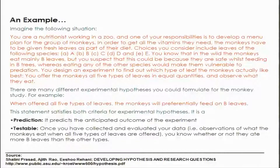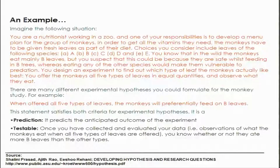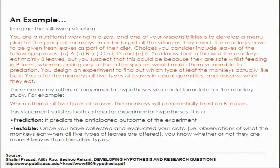There are many different experimental hypotheses you could formulate for the monkey study. For example: when offered all five types of leaves, the monkeys will preferentially feed on B leaves. This statement satisfies both criteria for an experimental hypothesis — it predicts the anticipated outcome of the experiment, and it is testable because you can give all five leaf types and observe which ones they eat. Once you have collected and evaluated your data, you know whether your hypothesis is correct or not.